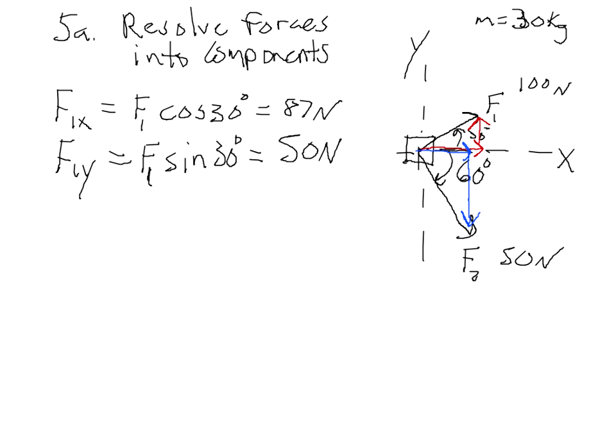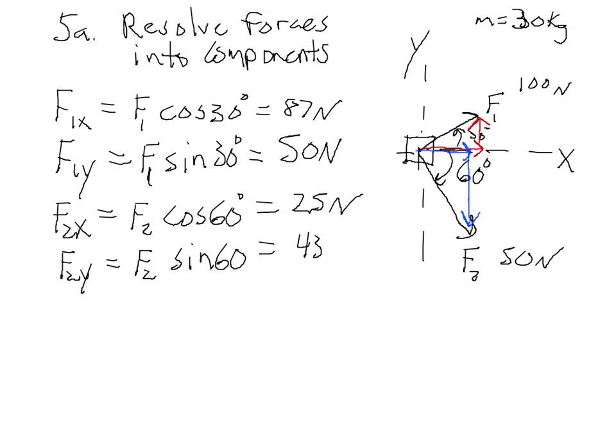We also need to find F2X and F2Y. F2X will be F2 times the cosine of 60. F2 is 50 newtons. The cosine of 60 is a half, so F2X is 25 newtons. F2Y is F2 times the sine of 60. The sine of 60 is 0.87, so that's about 43 and a half newtons.